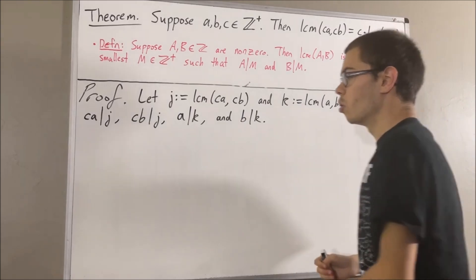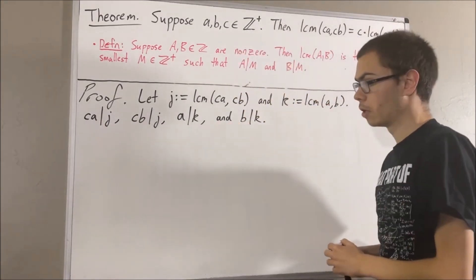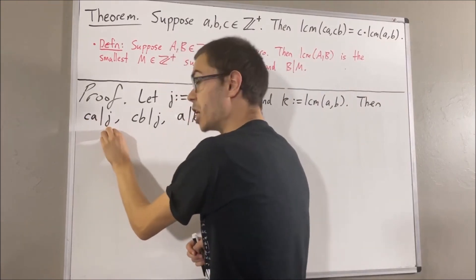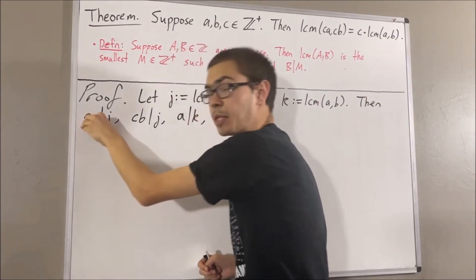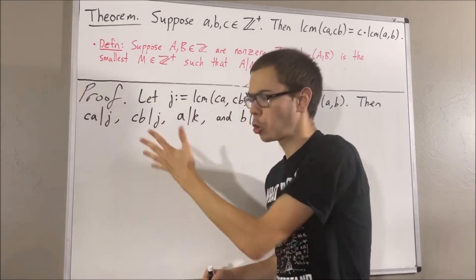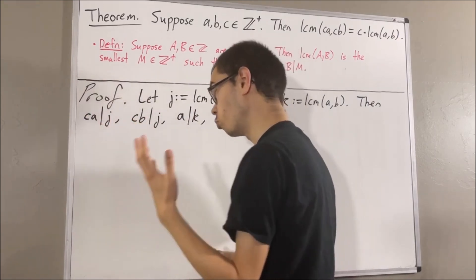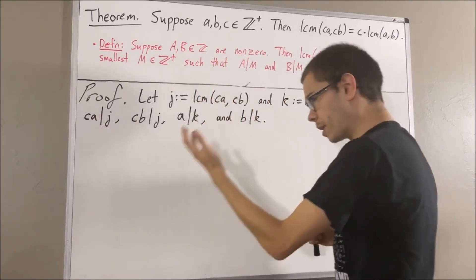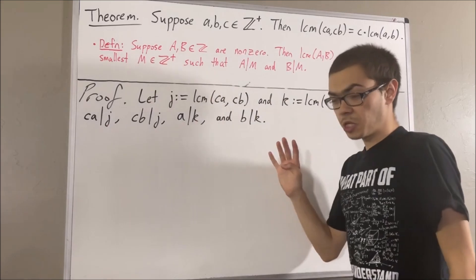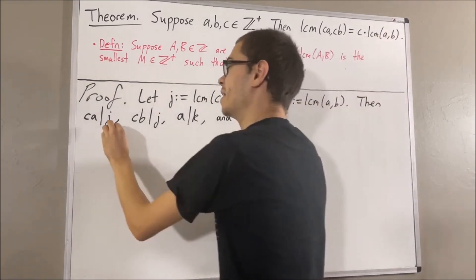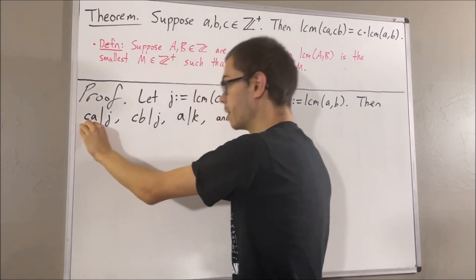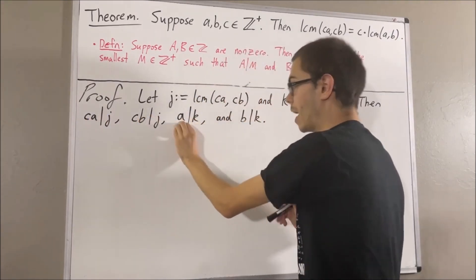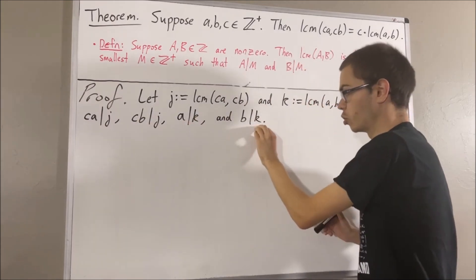But what do these four things mean? To say that ca divides j means j is equal to ca times some integer — we'll call that integer p. Applying that idea four times, there are four integers p, q, r, and s such that j equals ca times p, j equals cb times q, k equals a times r, and k equals b times s.